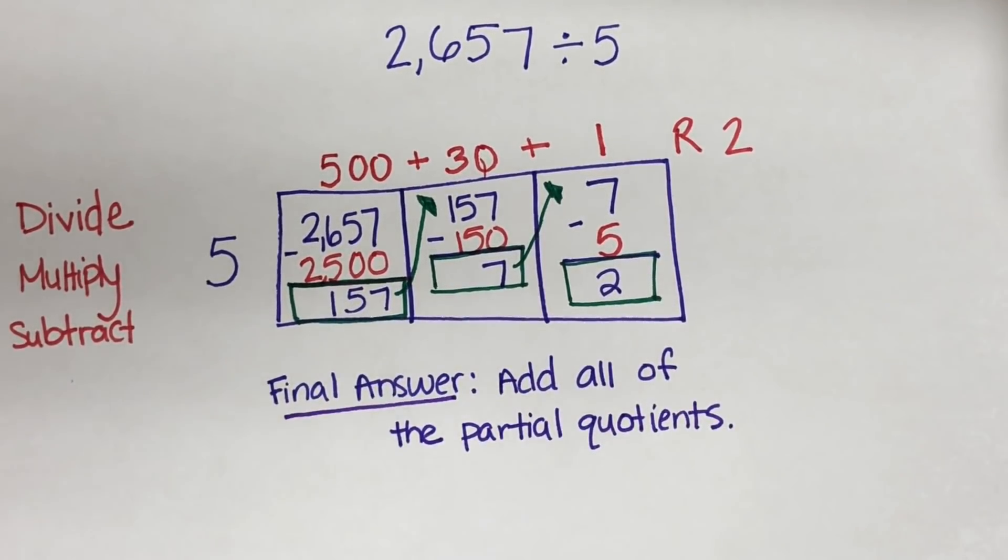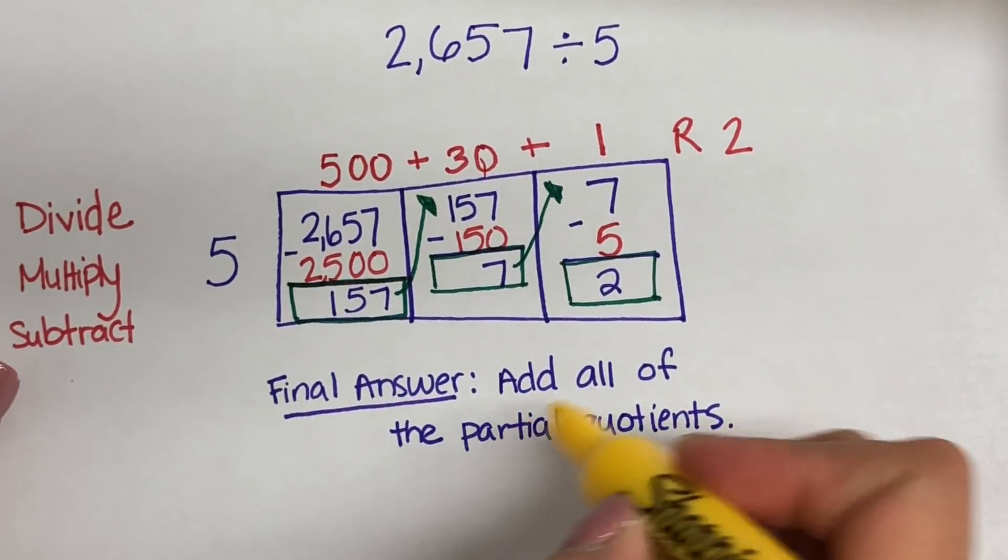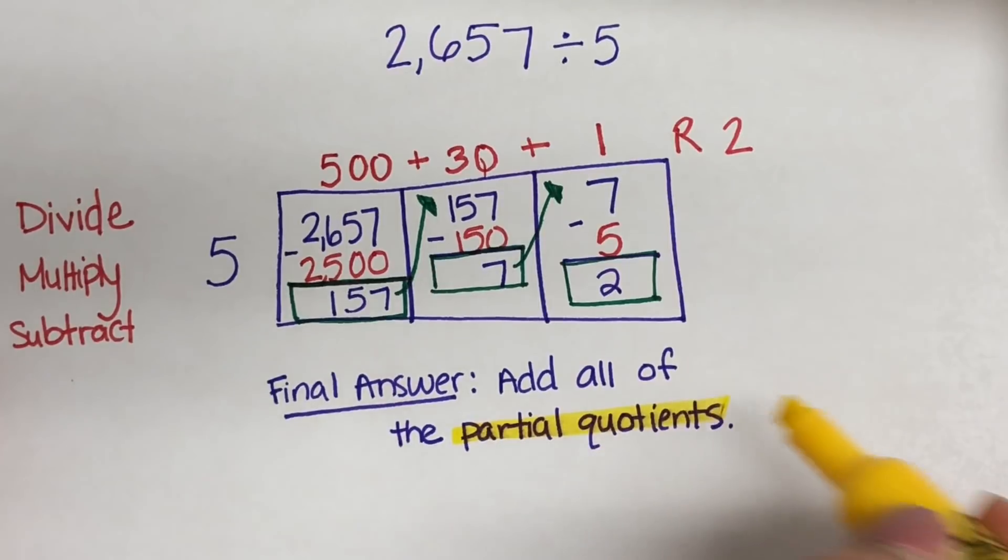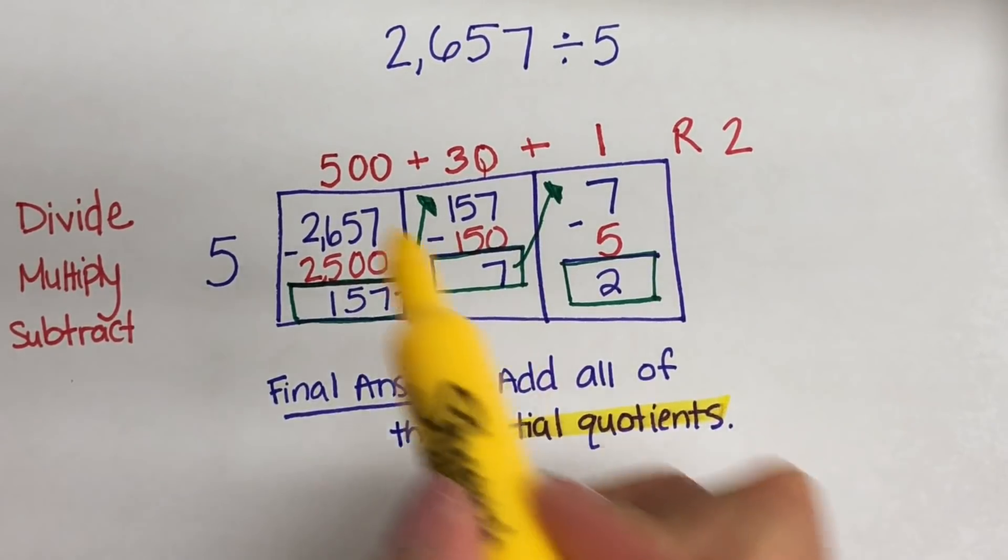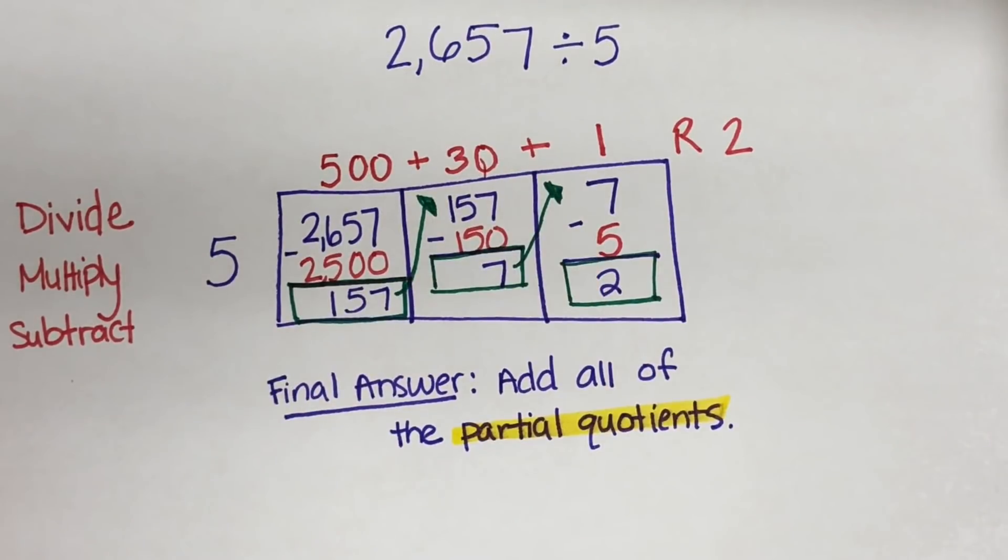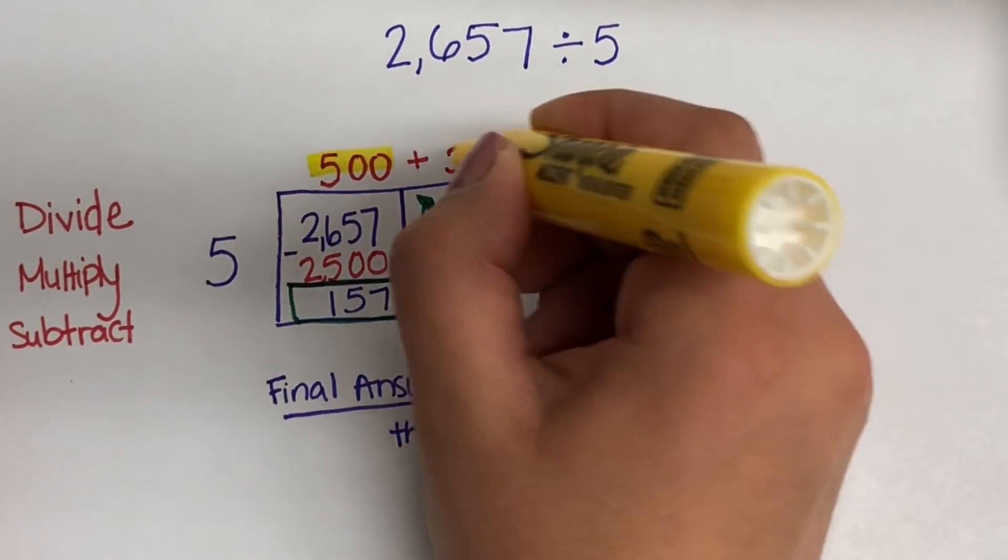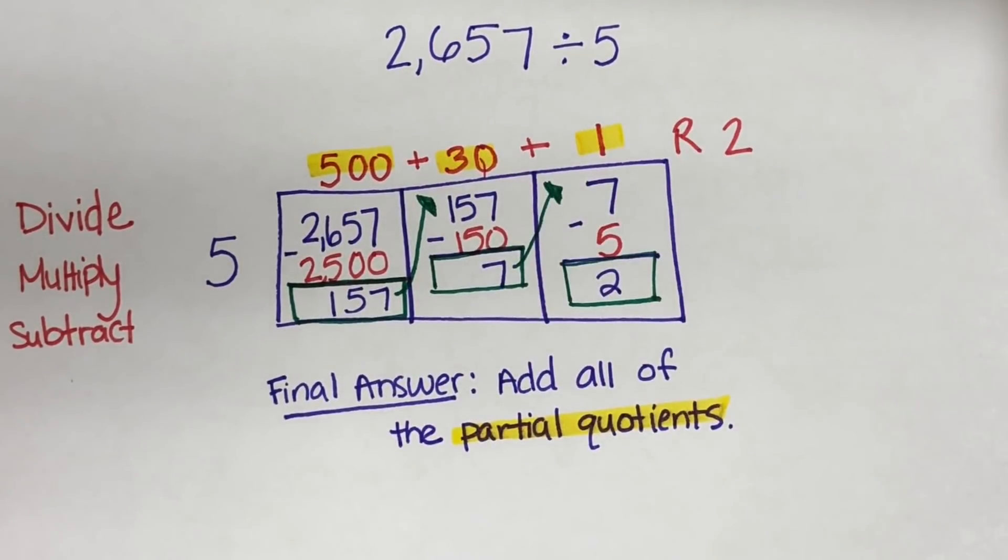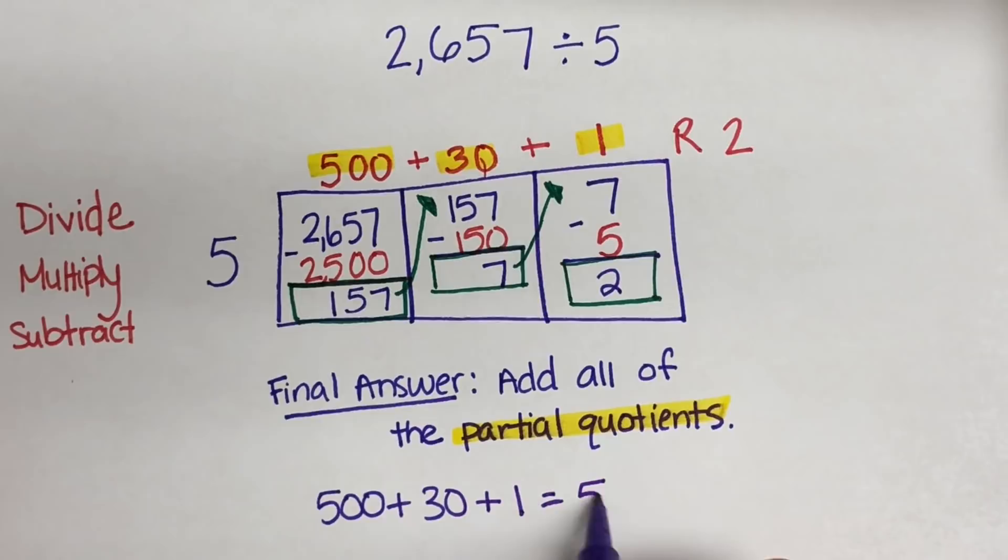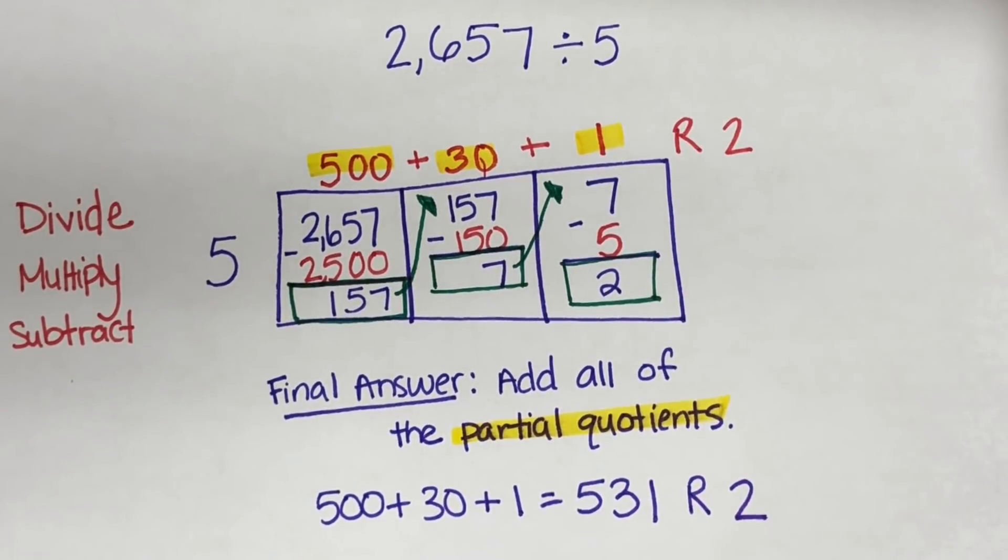So I'm going to go ahead and write that step down. And now let me show you what the partial quotients are, just as a reminder. Our partial quotients, I'm going to highlight in yellow, are the top. So our 500, our 30, and our 1. So now we are going to add those numbers together. We have 500 plus 30 plus 1, and that gives us 531. But please don't forget about the other really important part of the answer, and that is our remainder. We need that R2 in our answer, otherwise it is not complete. So there's our answer.